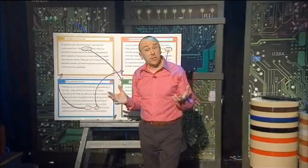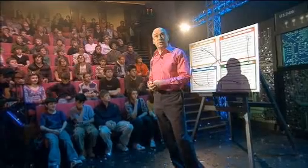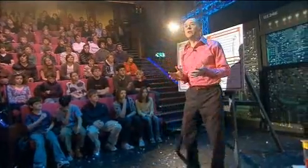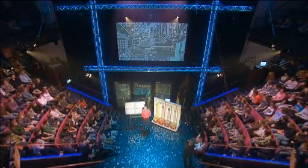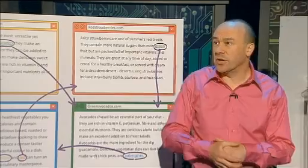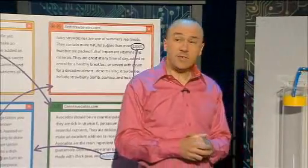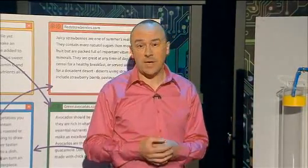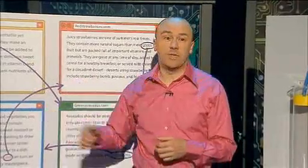Have you ever wondered how a search engine decides which page to put at the top of the list? Well, it uses lots of different kinds of information, but let's just have a look at two of the most useful things. The first of these is called PageRank, and it tells us how important a web page is, and it makes use of these links.